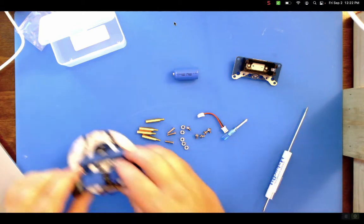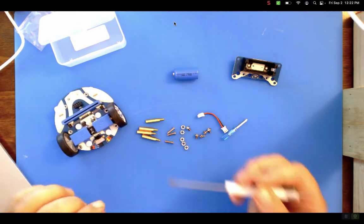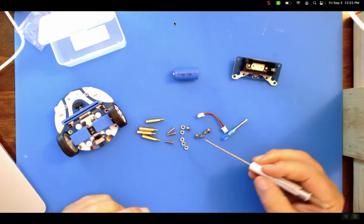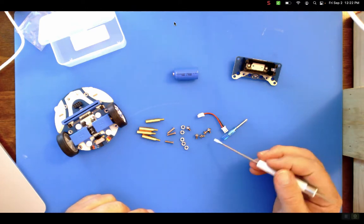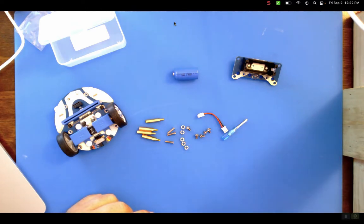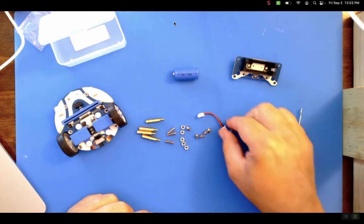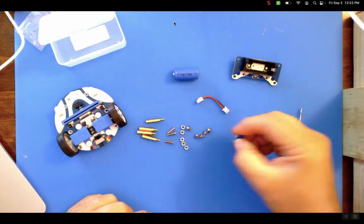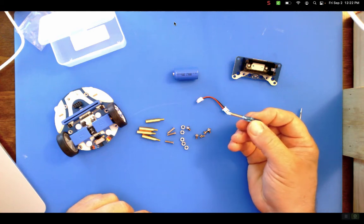And then we have the standoffs to raise this up. Three flat screws, one, two, three, four, five short screws, and five nuts. A little baby screwdriver, which is good.